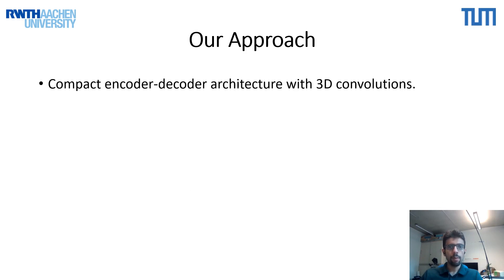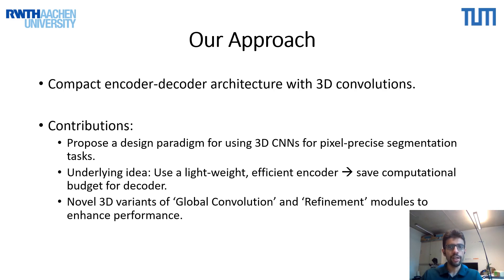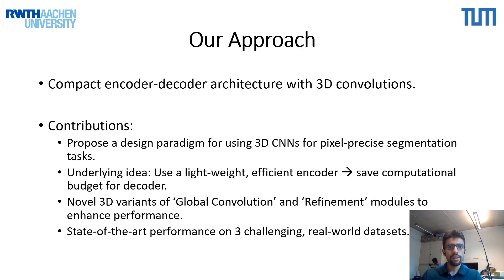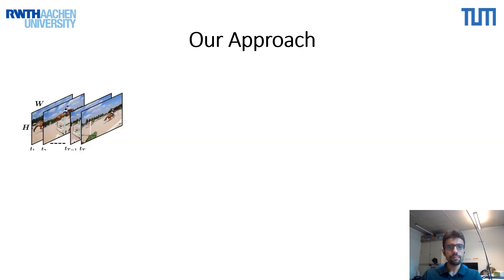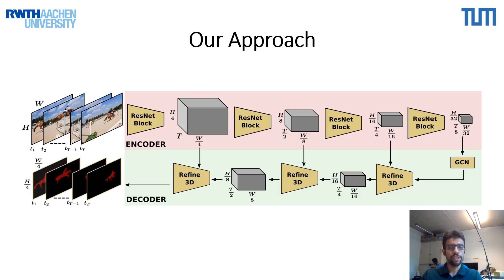In our paper, we propose a compact 3D CNN with an encoder-decoder architecture. Our main contribution lies in proposing a design paradigm for 3D CNNs that makes them feasible for video segmentation tasks. For this, we use an efficient lightweight encoder network and propose 3D variants of global convolution and refinement modules to enhance performance. Our method outperforms existing state-of-the-art on three different datasets by a large margin. Our approach is an end-to-end trainable encoder-decoder network which takes a video clip as input and produces the final segmentation masks with no need for additional post-processing.